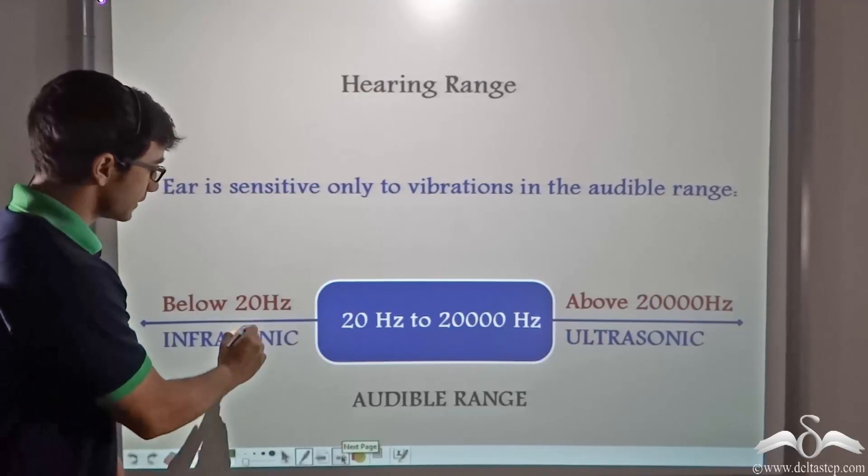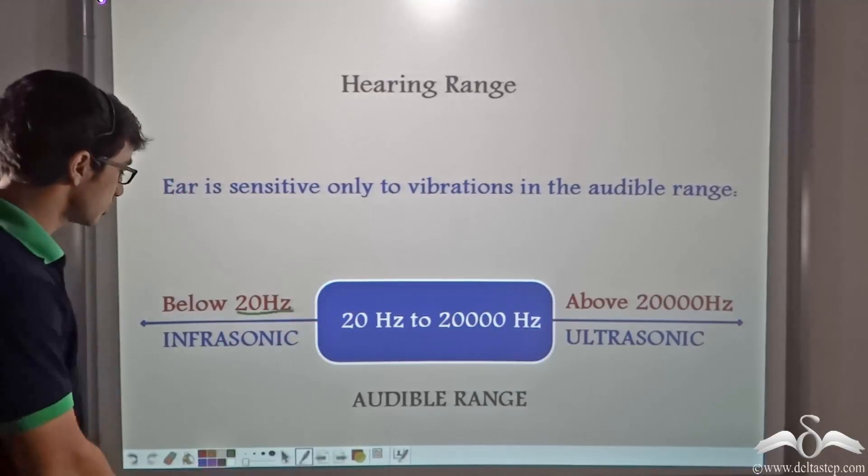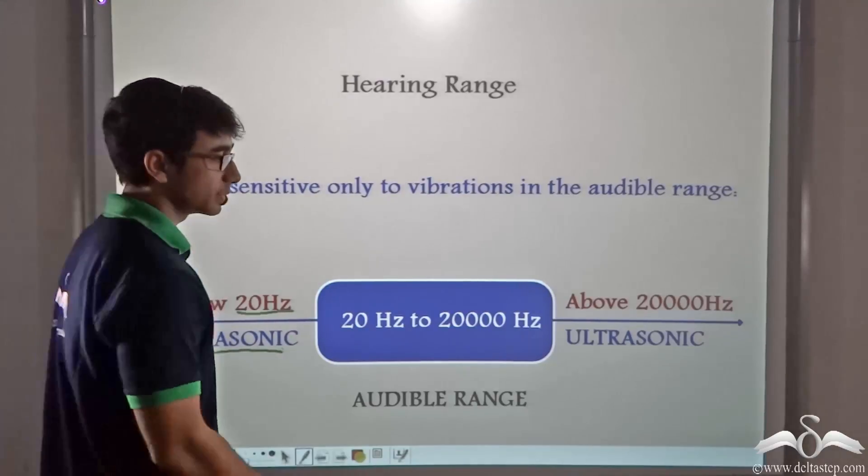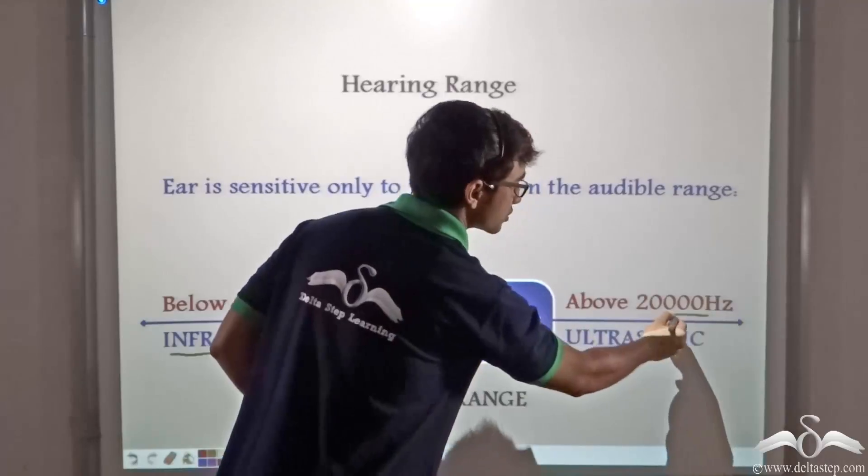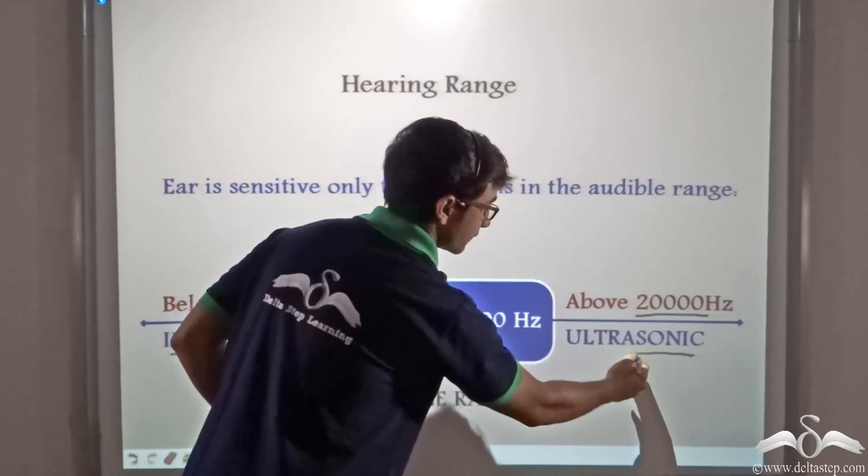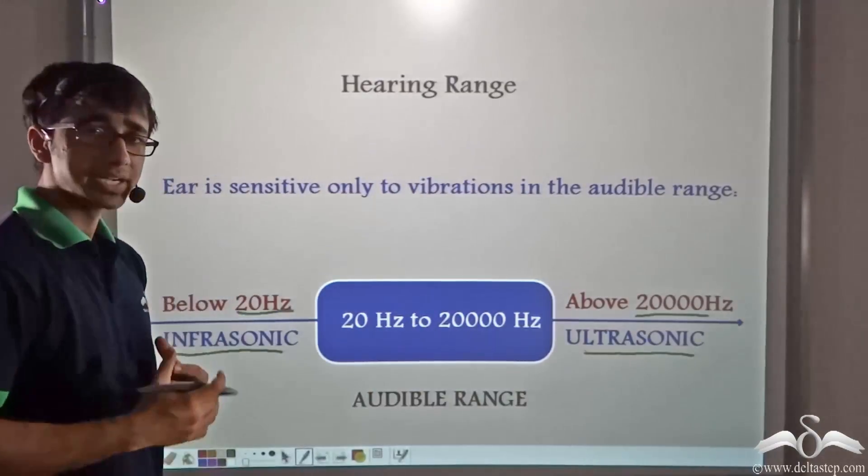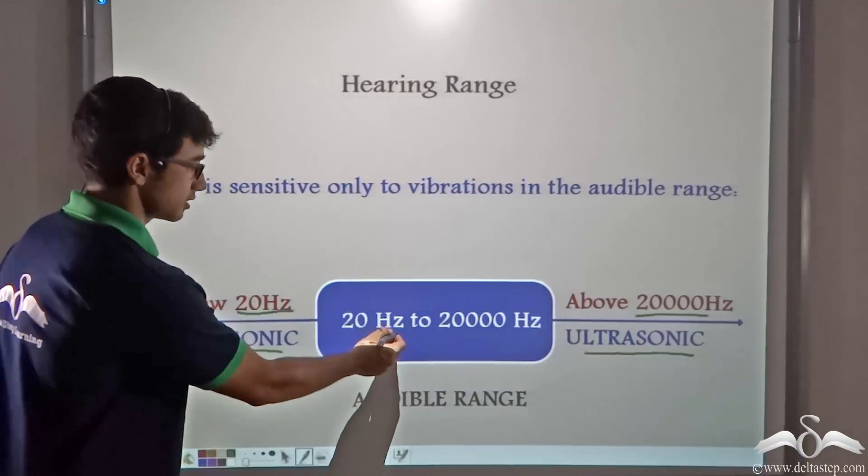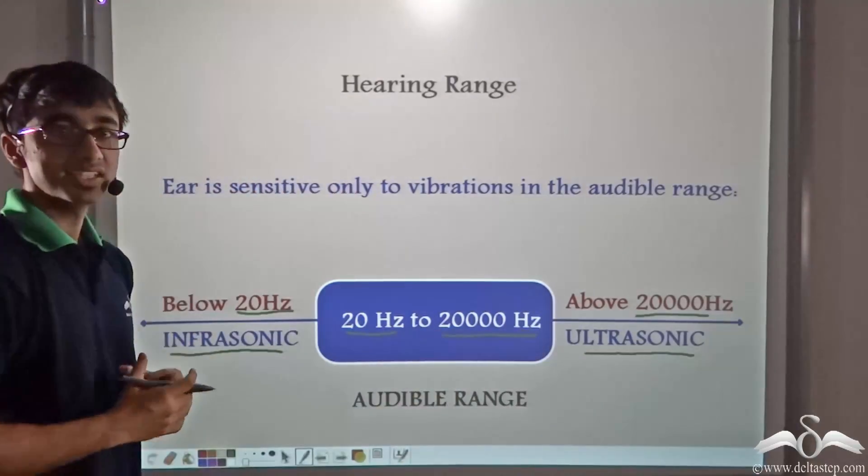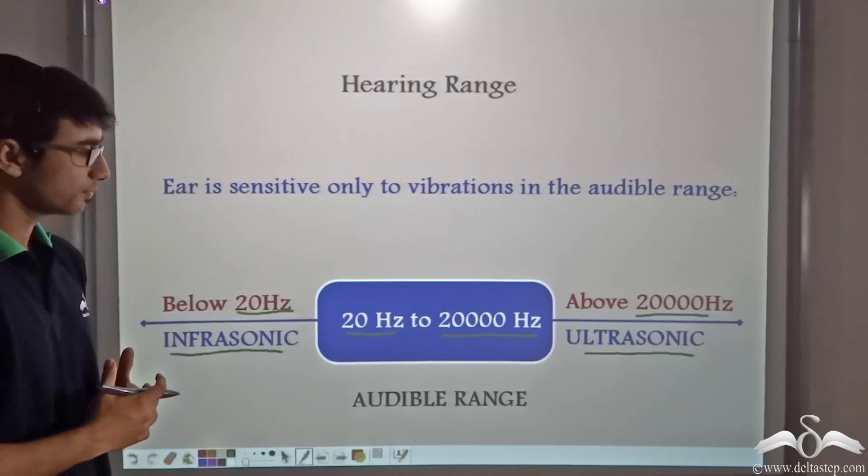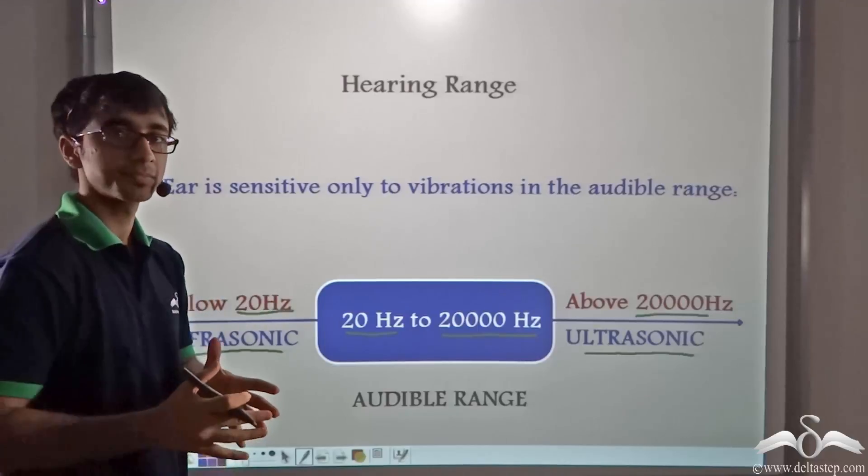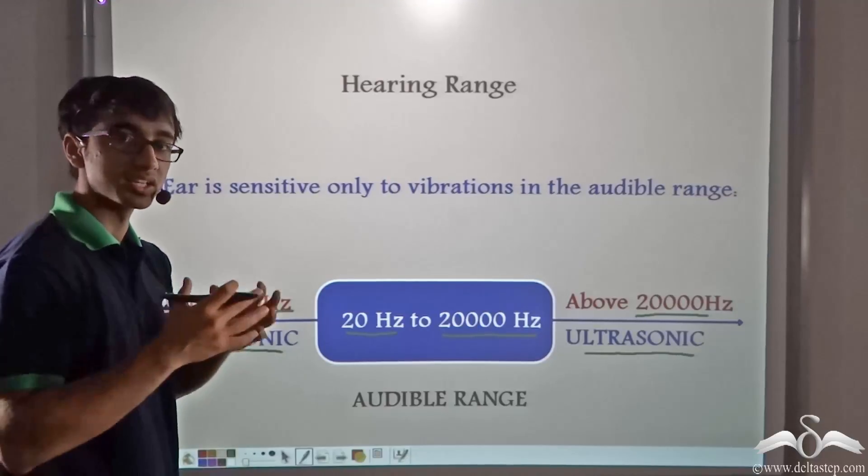Below a frequency of 20 Hertz the frequencies are known as infrasonic, and above a frequency of 20,000 Hertz the frequencies are known as ultrasonic. But in between 20 Hertz and 20,000 Hertz is the audible range. So if any frequency lies in between 20 Hertz and 20,000 Hertz, human beings are able to hear that sound.